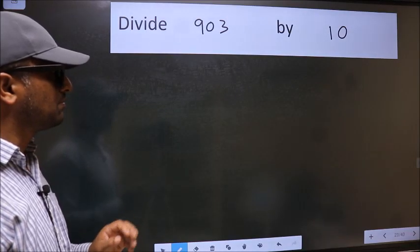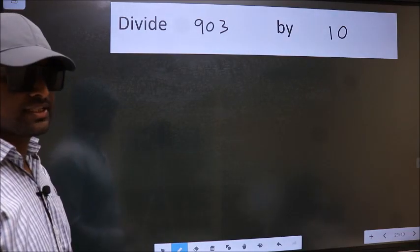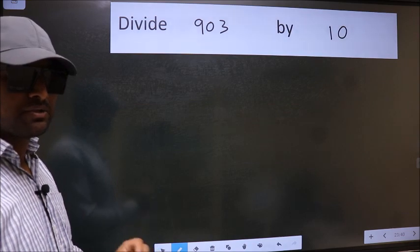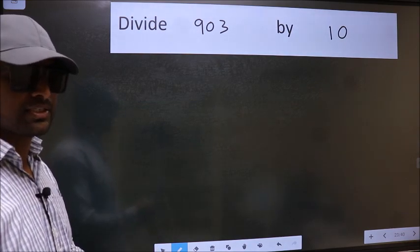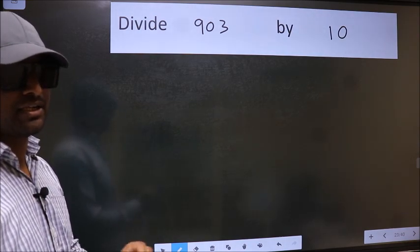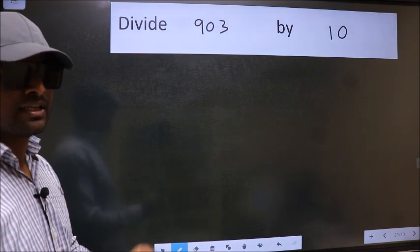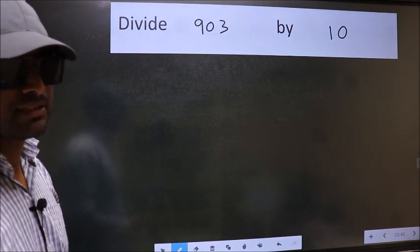Divide 903 by 10. While doing this division, many do this mistake. What is the mistake that they do? I will let you know. But before that, we should frame it in this way.